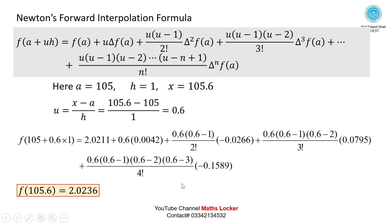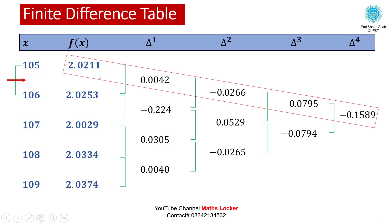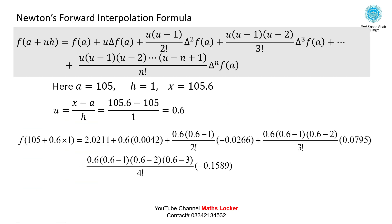We verify the result: 2.0236 lies between the table values 2.0212 and 2.0253, and since 2.0236 is less than 2.0253, the answer is correct. This is the required value.